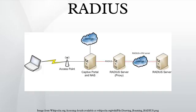Packet Structure: the RADIUS packet data format is shown to the right. The fields are transmitted from left to right, starting with the code, the identifier, the length, the authenticator and the attributes. The identifier field aids in matching requests and replies. The length field indicates the length of the entire RADIUS packet including the code, identifier, length, authenticator and optional attribute fields. The authenticator is used to authenticate the reply from the RADIUS server, and is used in encrypting passwords. Its length is 16 bytes.